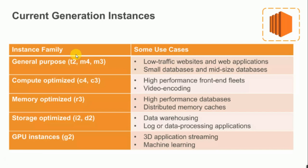Now we talk about instance type. For example, if I need two CPUs and 4GB RAM, there are instance types like T2 Micro, T2 Medium, T2 Large. For the general purpose family, we have T2, M4, M3. Use cases include low-traffic websites, web applications, small databases, and mid-size databases.